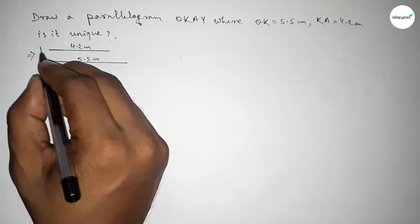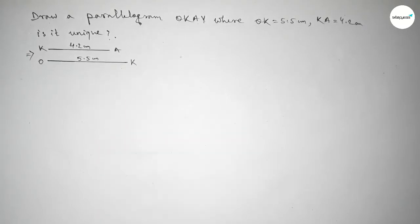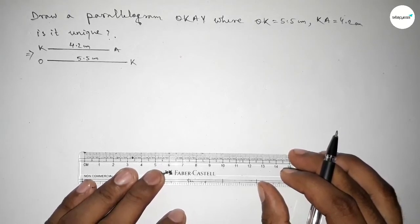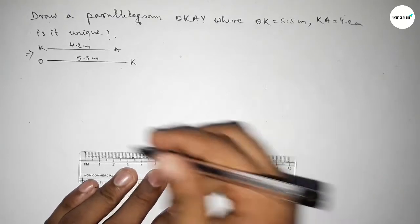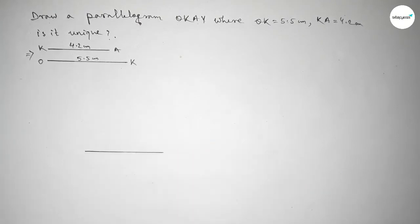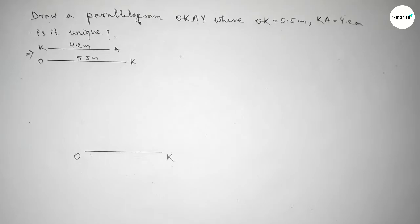This is the KA line and this one is the OK line. Now first we have to draw here the line 5.5 centimeters. So this is 5.5 centimeters, taking here point O and here point K.